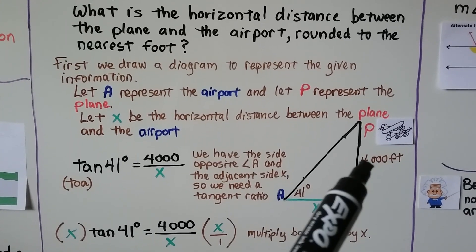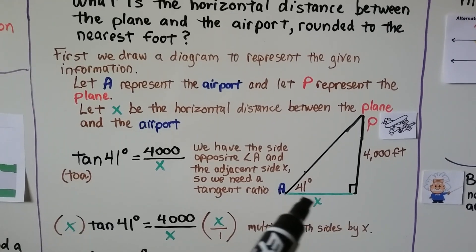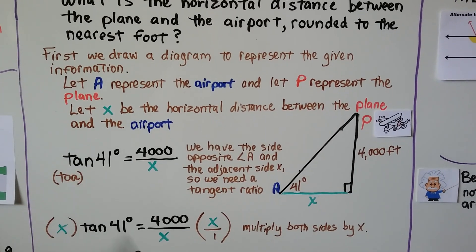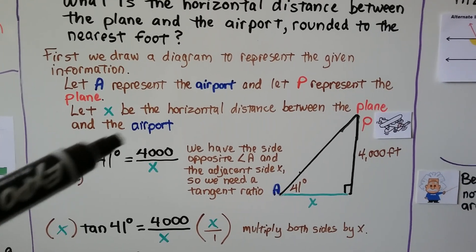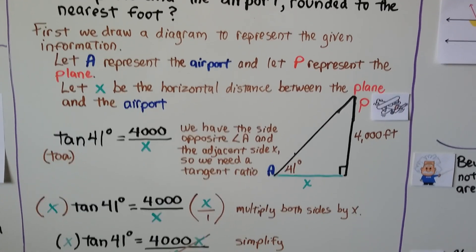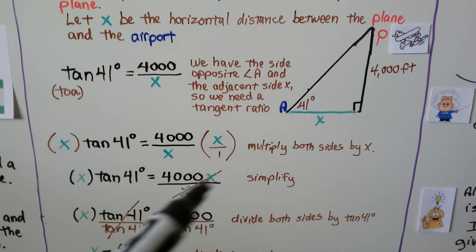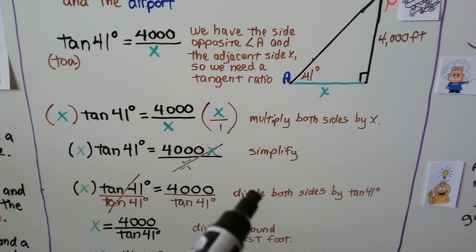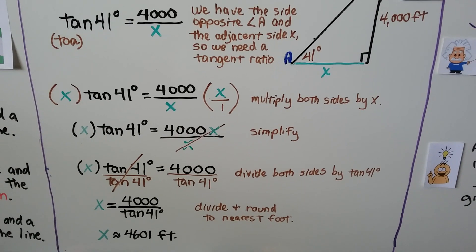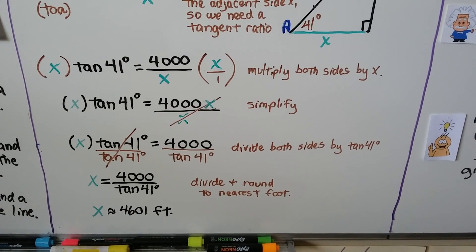For angle A we have an opposite side and we're trying to find X, the adjacent side. So we use opposite over adjacent — that's a tangent ratio. The tangent of 41 degrees equals 4,000 over X. Multiplying both sides by X and then dividing both sides by tangent of 41 degrees gives us X equals 4,000 divided by tangent of 41 degrees. Dividing and rounding to the nearest foot, X is approximately 4,601 feet.